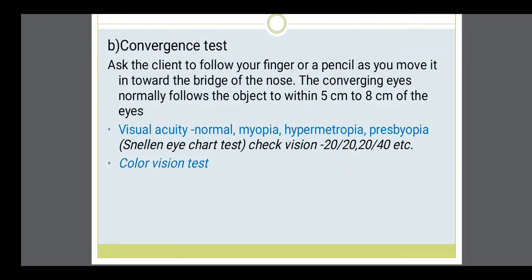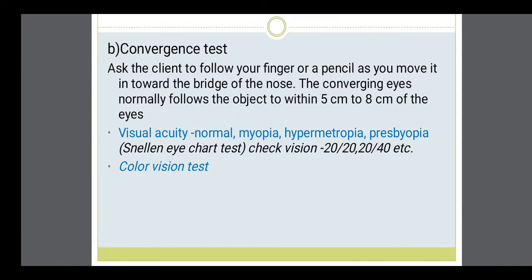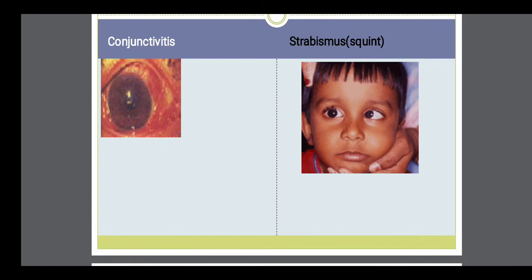Then we have to see the vision of a patient — whether hypermetropic, myopic, or normal. Then a color vision test for red and green color blindness, normally checked with the help of a color blindness chart. Conjunctivitis appears with the conjunctiva very reddish, totally red in color. Strabismus is squint.